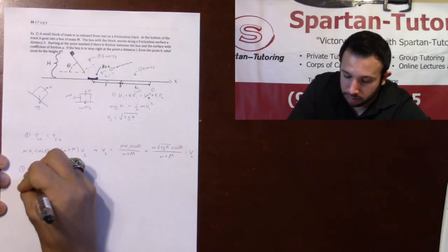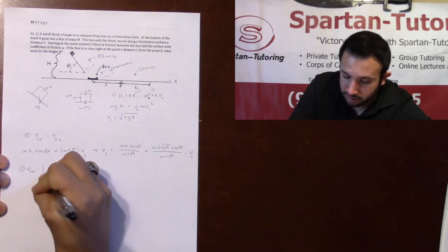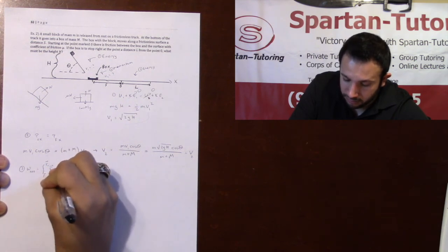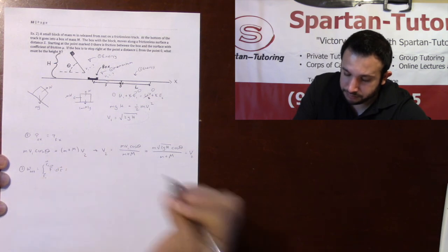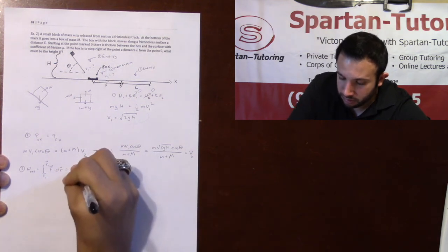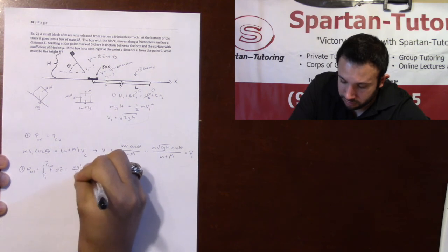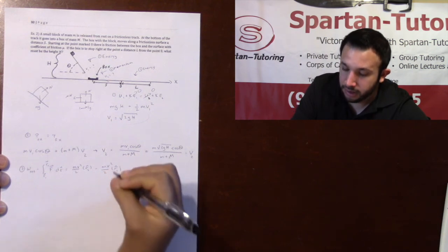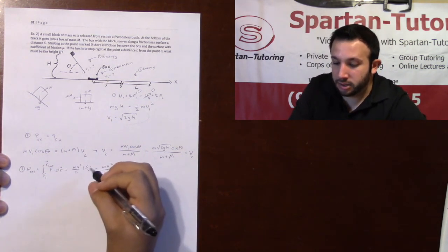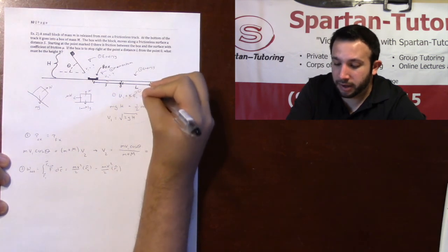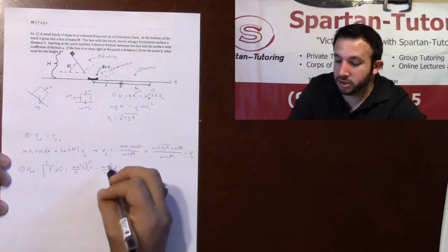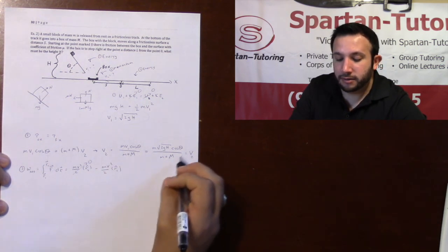So we know that our network is the integral from R1 to R2 of F dotted with dr, which is equal to M V squared over 2 at R2 minus M V squared over 2 at R1. And we know that our final kinetic energy, if it comes right to a stop at L, we know that this is equal to 0. And your initial kinetic energy has a velocity V2.